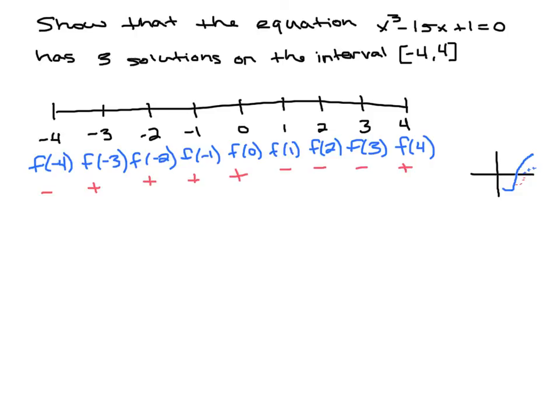After evaluating everything, we'll see that there is a change from negative to positive here, then positive, positive, positive, positive, and then they change again here to negative, negative, negative, and then it changes again here. So we have 3 times where it changed from negative to positive or positive to negative, implying that the function crossed the x-axis. So there are 3 solutions.